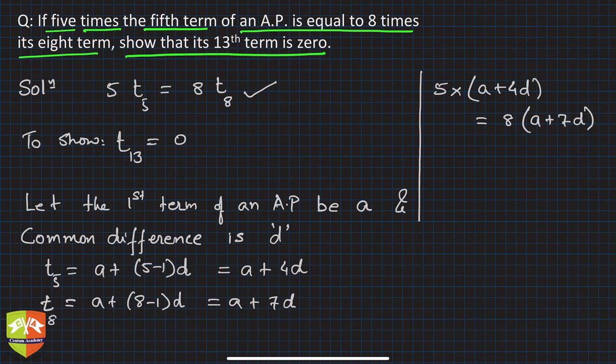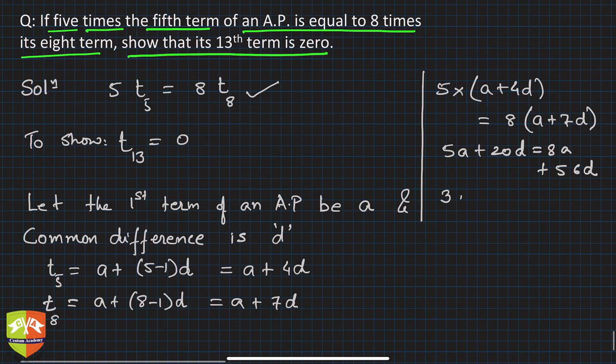What do we get? We get 5a + 20d = 8a + 56d. If you simplify, you'll get 8a - 5a, that is 3a + 36d = 0.